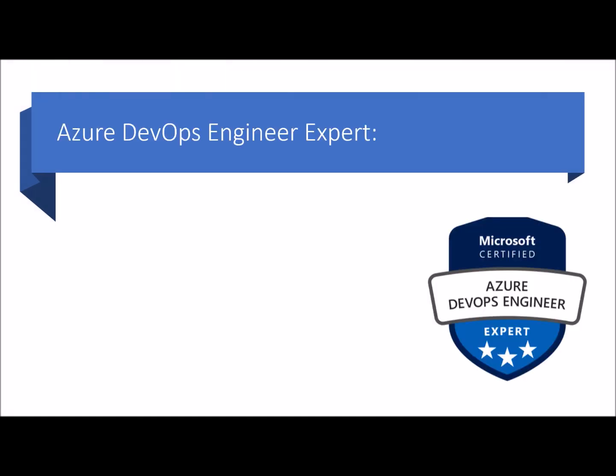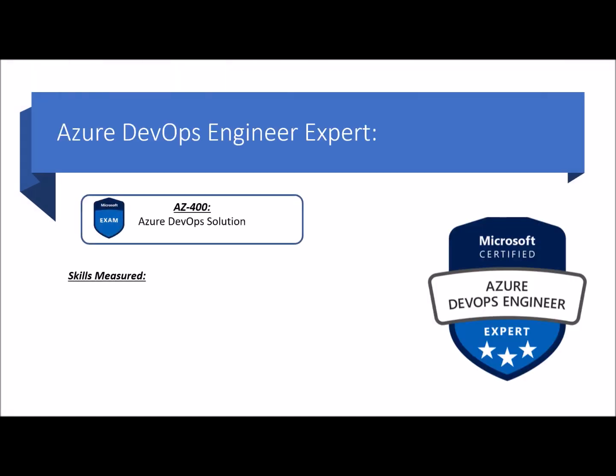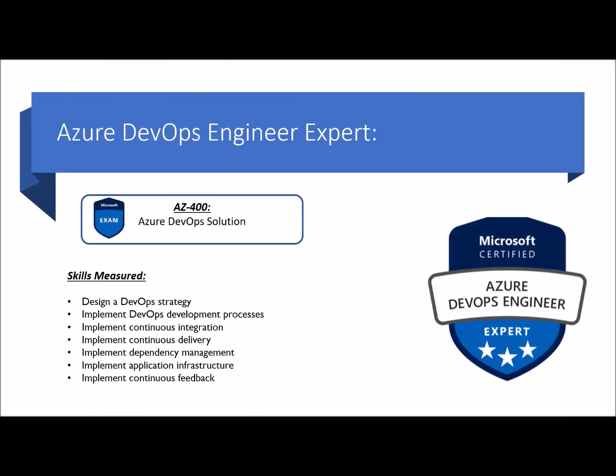The skills required for AZ-400 are design a DevOps strategy, implement DevOps development processes, implement continuous integration, continuous delivery, dependency management, application infrastructure, and continuous feedback. On successful completion, you would be certified as Azure DevOps Engineer Expert.